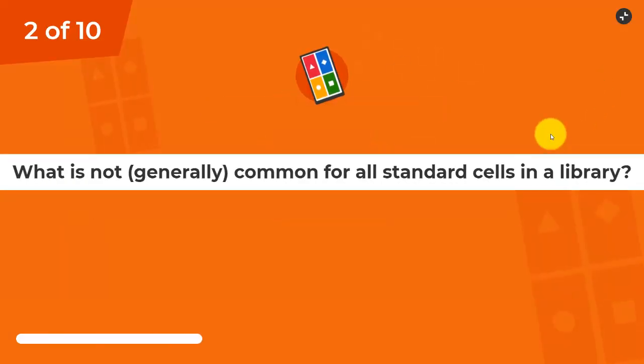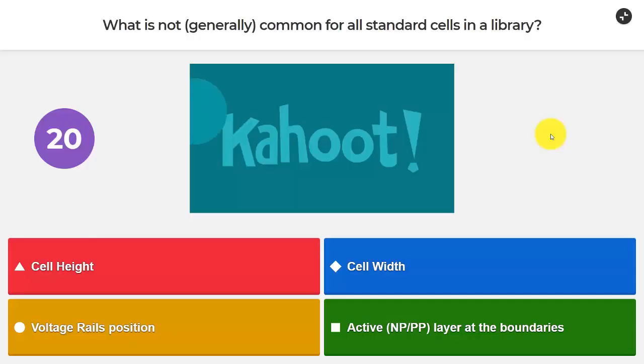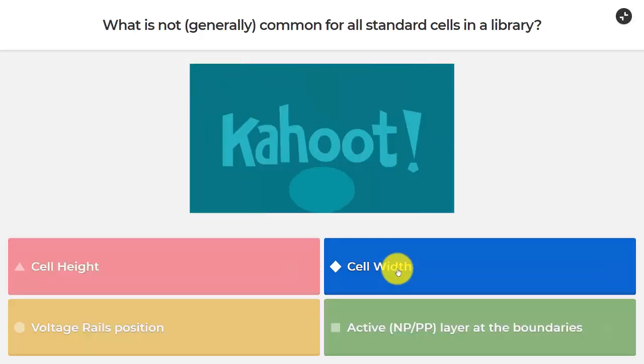Question number two. What is not generally common for all standard cells in a library? The cell height, the cell width, the position of the voltage rails, or the active layer at the boundary, the NP and PP. Well I know what it is. It's cell width.